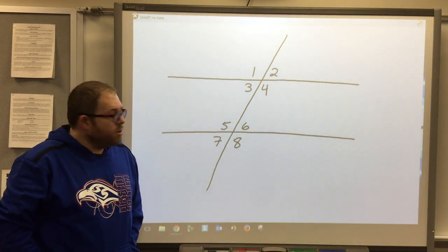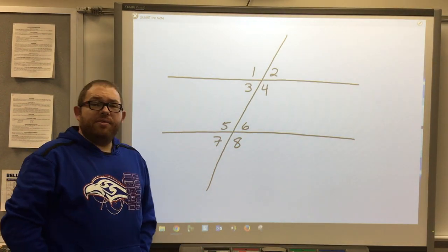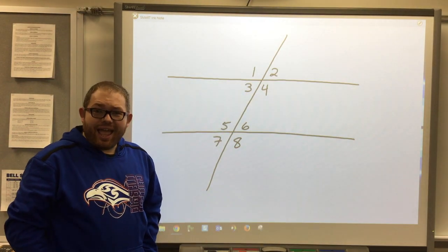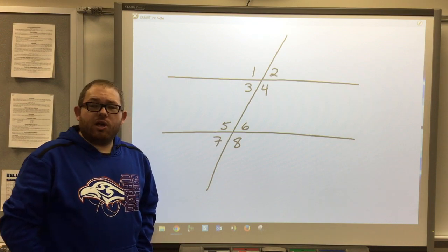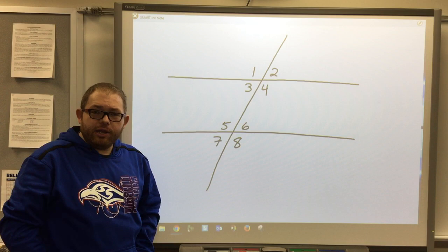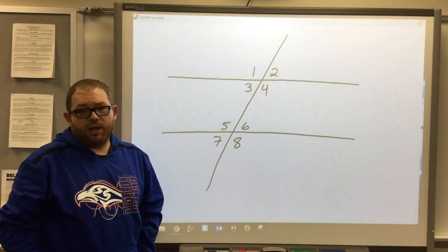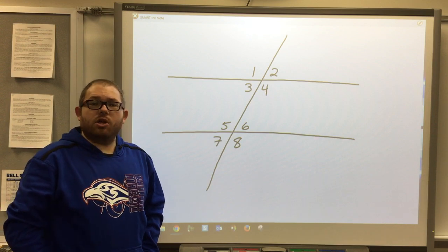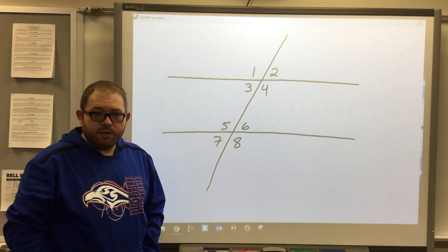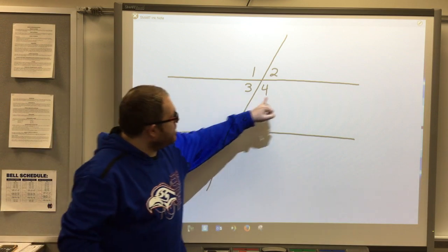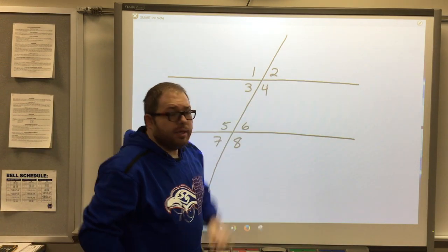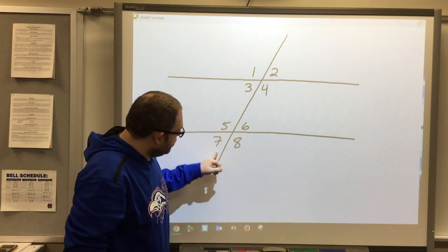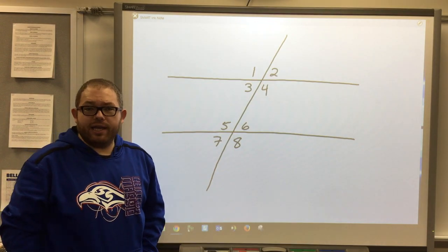So I've drawn a diagram with two lines and then a transversal. I've numbered all eight angles. Now we just talked about in the previous skill linear pairs and vertical angles, and there's lots of those in the diagram, but there's also other types of angles. For example, if one angle in this group is in the same position as one of the angles in this group, we call those corresponding angles.